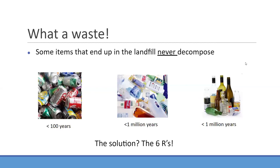So why does this matter? Items that end up in the landfill sometimes never decompose. Plastic is the biggest culprit — it takes about one million years to decompose in a landfill. Glass similarly may get smaller but never actually disappears. Even an aluminum can takes over a hundred years to decompose. It's really important that we divert those things away, and the solution is the six R words.